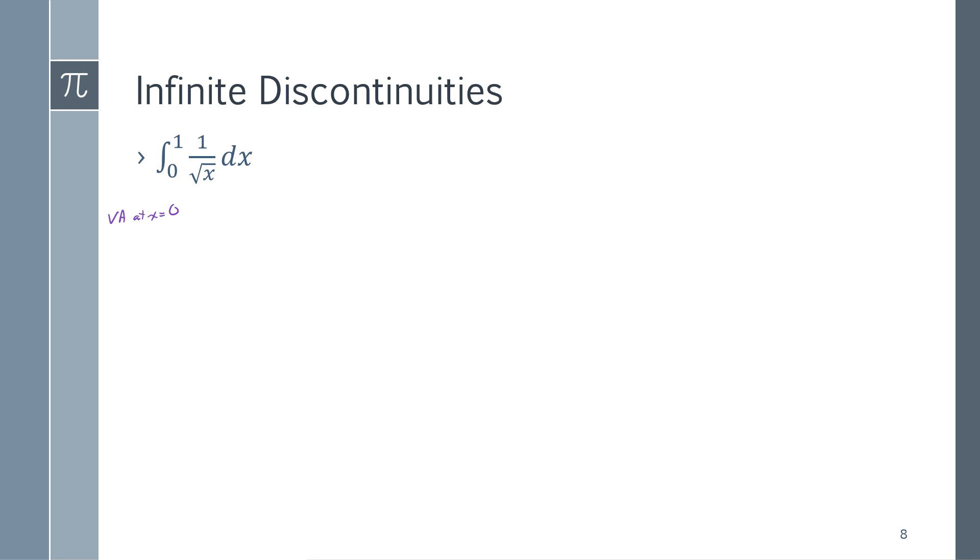That means as I'm looking at the graph of this, my rectangles have infinite heights as I'm approaching 0 from the right-hand side. So, what we do is we say, because there's a vertical asymptote, my function is discontinuous at 0, I'm going to replace the 0 with a variable.